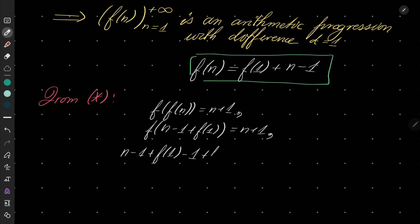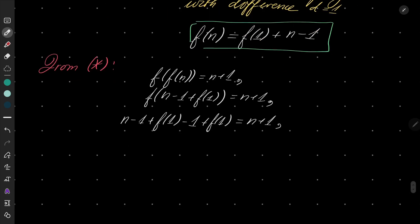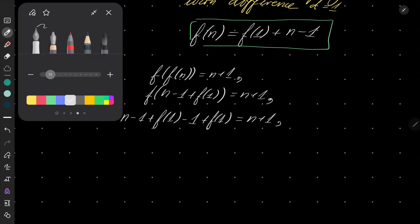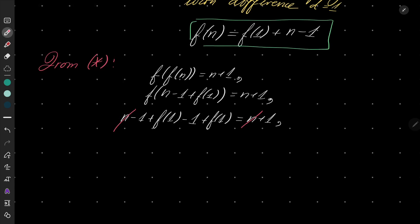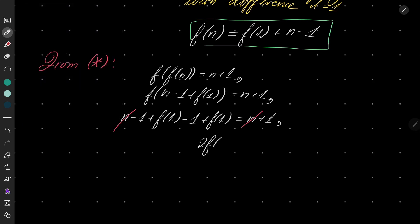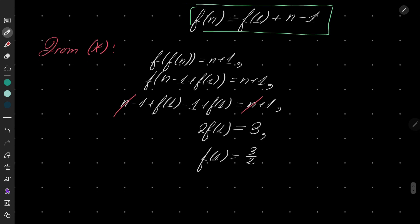And once again, the nth term is the argument minus 1 plus f(1), equals n plus 1. Now let's notice we have n's on both sides, and after simplification we get 2 times f(1) equals 3, which means f(1) equals 3 over 2.